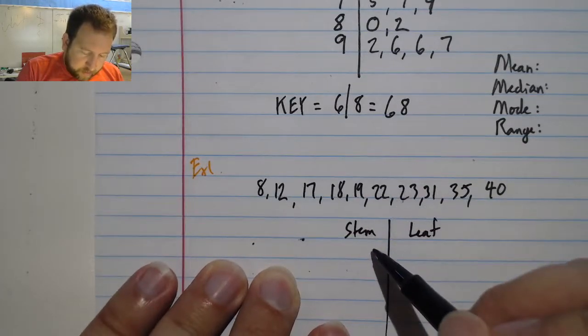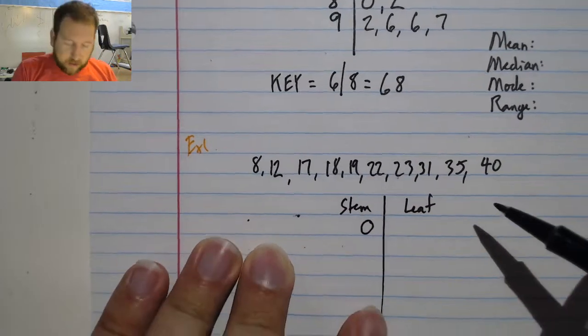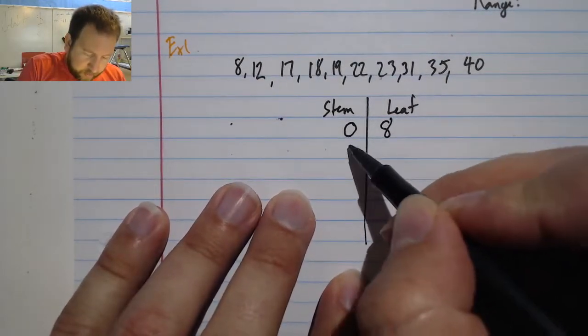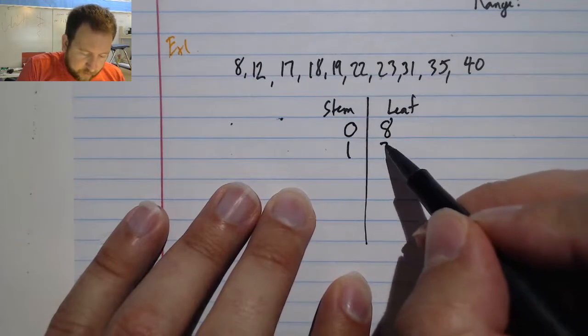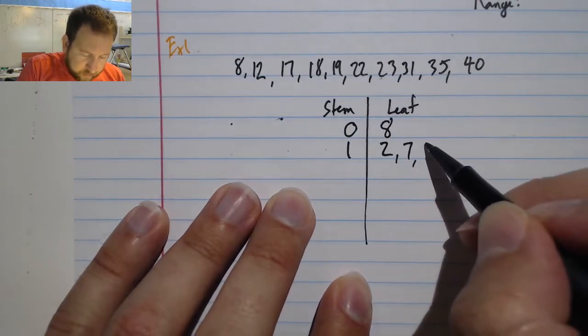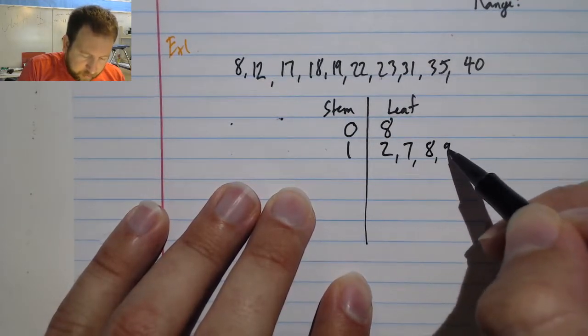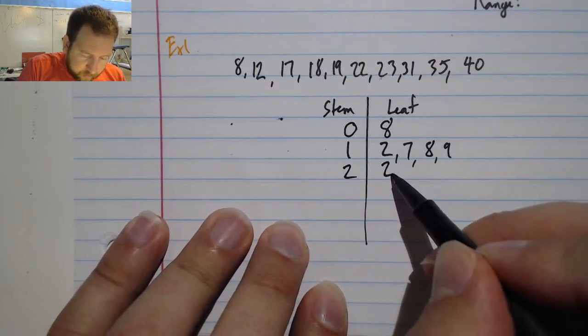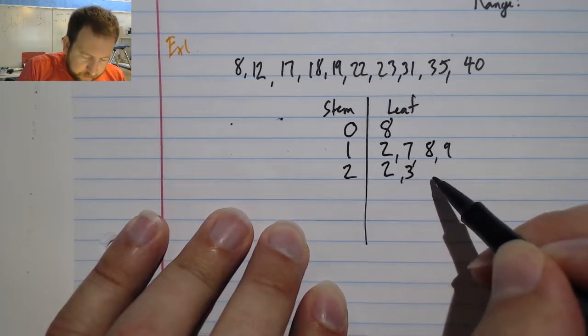Alright, I'm going to start with my zero in my tens column. Let me move this up. And my eight. Then I'm going to do my numbers with a one in the tens column, a two, a seven, an eight, and a nine. Then I'll do the numbers with a two, a two, a three. That's it.